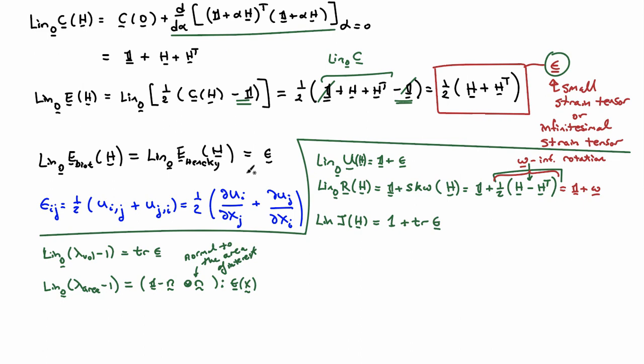So you pick an area of interest by its orientation, evaluate the strain at that point, and this relationship gives you the area strain. It's a little bit simpler—you don't need to calculate J F-inverse-transpose; you just calculate epsilon and contract it with this tensor (identity minus orientation outer product orientation).